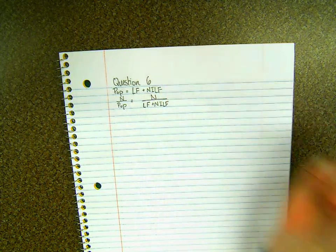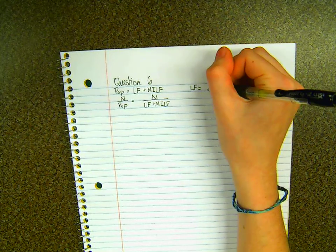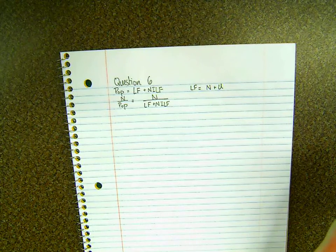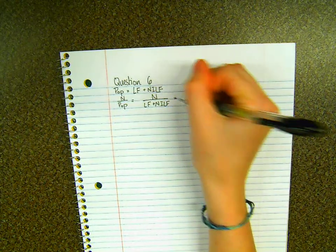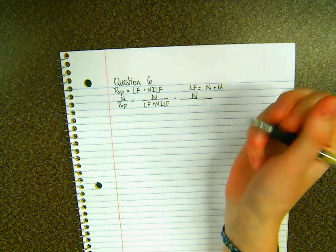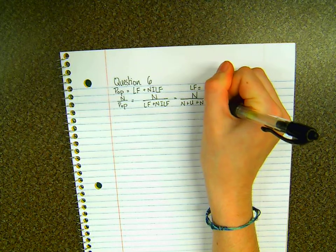Now we know from class that the labor force is made up of those who are employed, which is N, and those who are unemployed, which is U. So we can set this whole fraction equal to N over N plus U plus those not in the labor force.